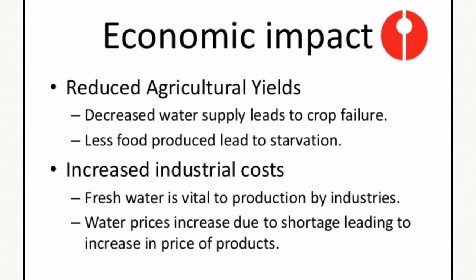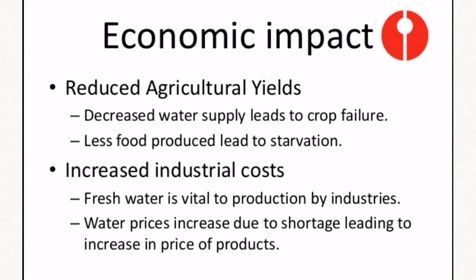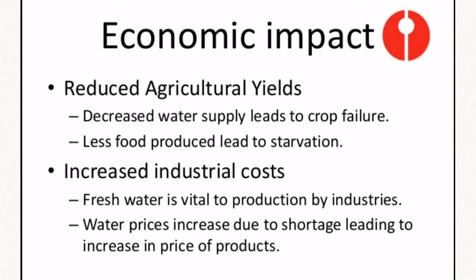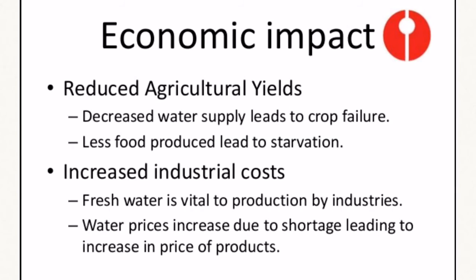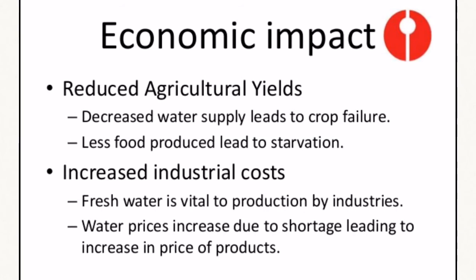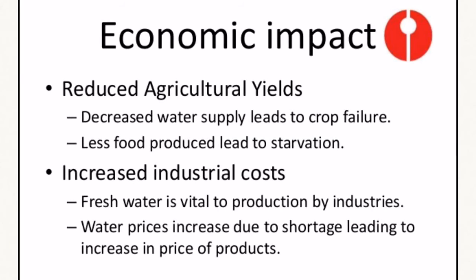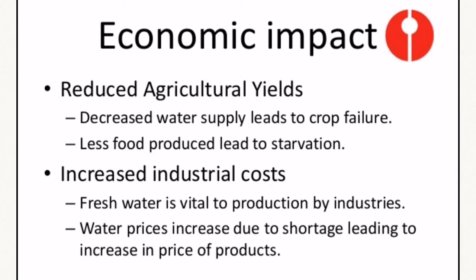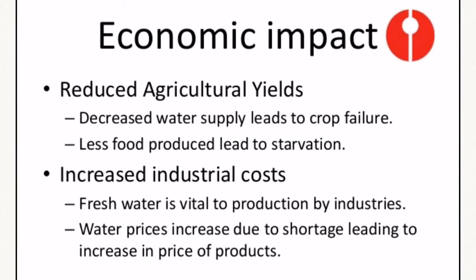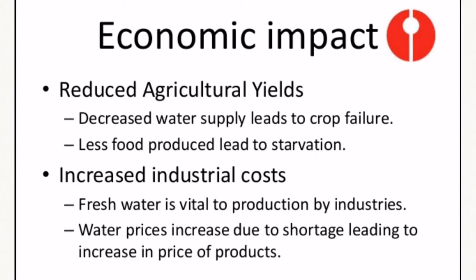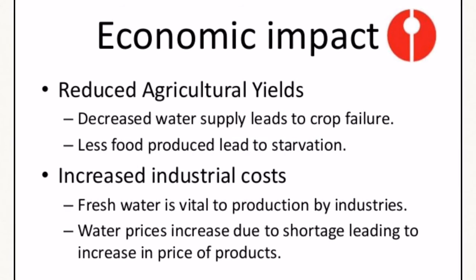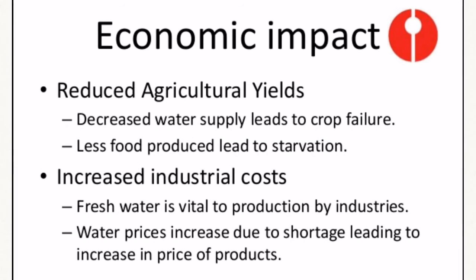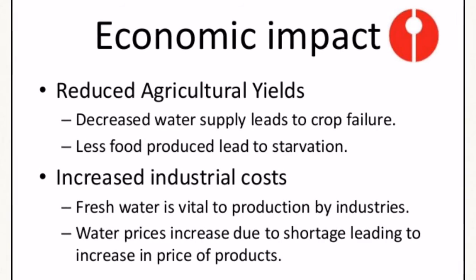Industries also use a lot of water. As a direct result of reduced water, you could have increased industrial costs. Fresh water is very important to industries — not because they bottle it up and sell it, but because it is commonly used as a cooling agent for machines. Machines in industries run for very long hours at very high heat and need to be cooled down or they will break down. The most common way is to run fresh water across the machines. When there isn't enough water, water price increases lead to an increase in the price of products, because the factory passes on the increase in cost to the consumer.